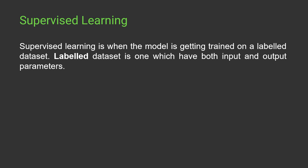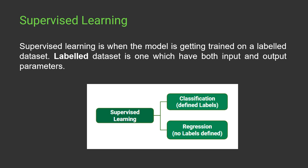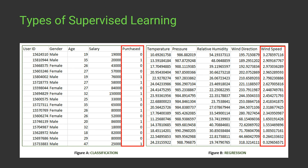Based on the dataset, supervised learning is divided into two types: classification and regression. In classification, we have defined labels — the dataset is discrete. In regression, we have continuous data in a fixed range. Let me show two datasets: one for classification and one for regression.